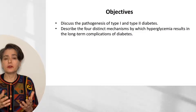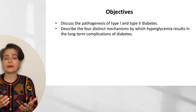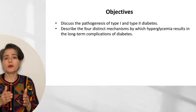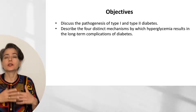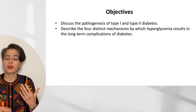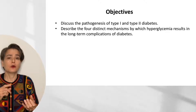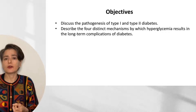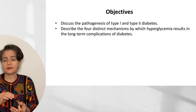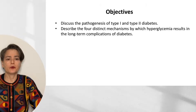In order to do this, I have to begin by discussing the pathogenesis of type 1 and type 2 diabetes, but then we're going to focus on the four distinct mechanisms by which hyperglycemia causes the long-term complications of diabetes that you'll see in your patients — blindness, lower extremity gangrene with the need for amputation, atherosclerosis, myocardial infarction, and stroke.